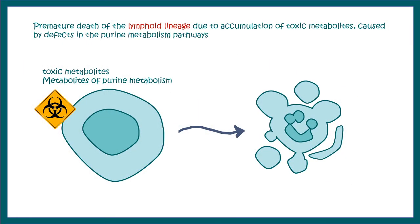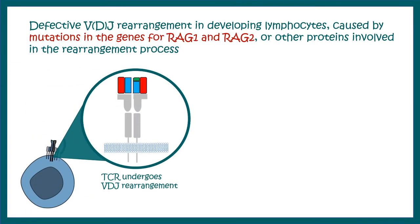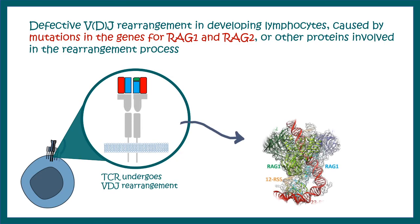Premature death of the lymphoid lineage is also reported in SCID. In most cases, toxic metabolites of the purine biosynthetic system accumulate, which leads to destruction of these early or immature T-cells. Defective VDJ recombination has also been found to be a cause of SCID. VDJ recombination occurs in the TCR gene, and the enzymes RAG1 and RAG2 — recombination-associated genes — are crucial for this process. However, RAG1 or RAG2 genes are often mutated, so VDJ recombination does not happen and TCR receptors lack diversity.